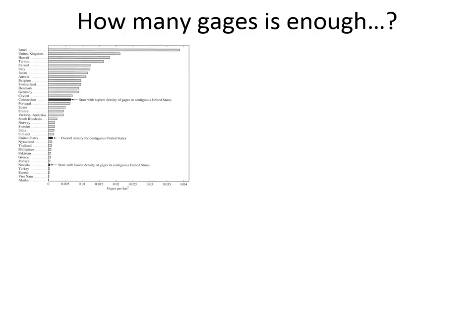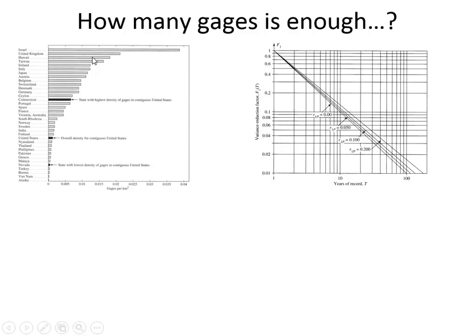The United States has a lot of rain gauges, but the density isn't nearly the same as some other countries. On average, the US has about 0.001 to 0.002 gauges per square kilometer. Countries like the United Kingdom or Israel have an order of magnitude more gauges. This figure from the text shows that the more gauges you have and the longer the period of record, the variance decreases and the 90% confidence interval becomes narrower.